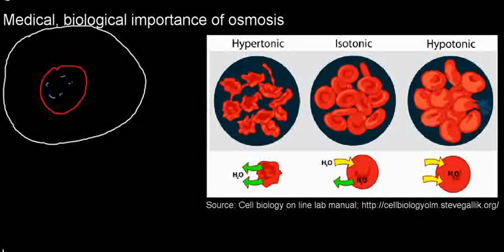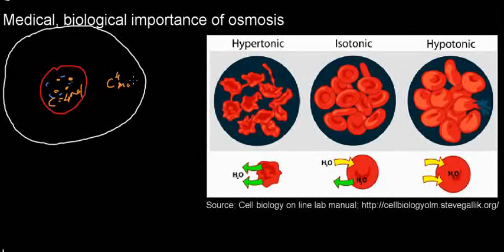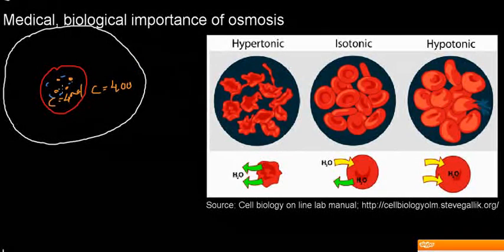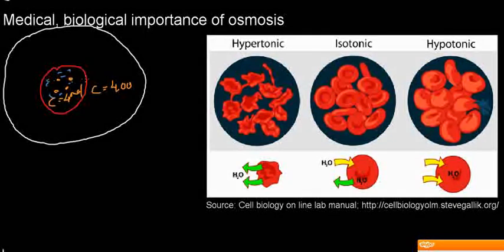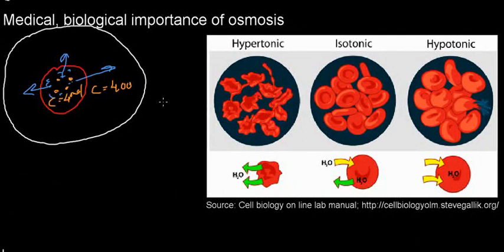It depends on the concentration of salt. Let's say the concentration inside is 4 moles and the concentration outside is also 4 moles — then there's no net transport of solvent molecules. But what if outside I have 400 moles? This is a hypertonic solution. What happens is that water is going to move towards the higher solute concentration — by definition, water molecules are going to escape into the surrounding. And this is what we observe: the red blood cell shrinking.